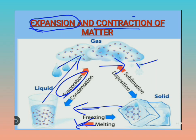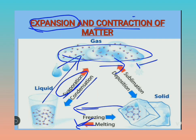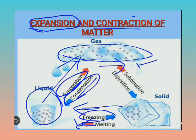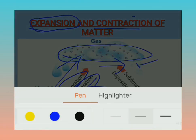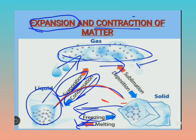Contraction mein kaun se examples aa jaayenge — ek toh aayega condensation, kyunki condensation mein gas zyada space occupy karti hai (intermolecular space zyada, movement bhi zyada), aur jab hum cool down karte hain toh woh liquid mein convert ho jaati hai — toh condensation contraction ka example hai. Similarly freezing mein bhi liquid solid mein convert ho jaata hai — so freezing bhi contraction ka example hai.